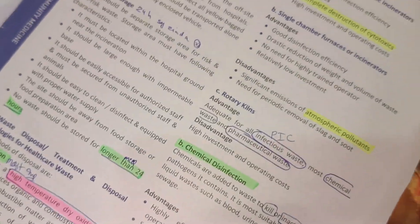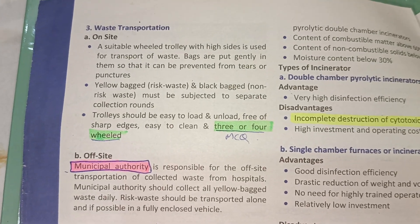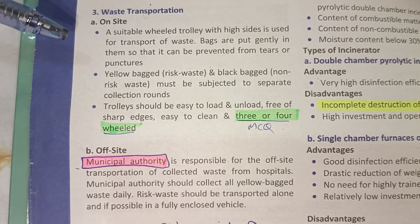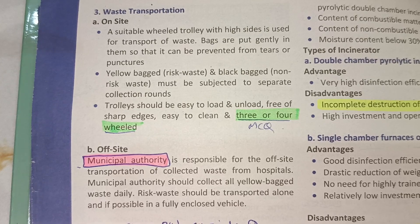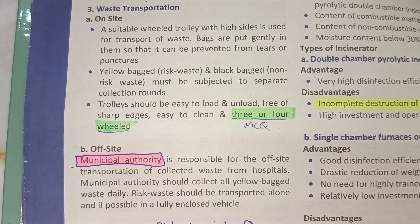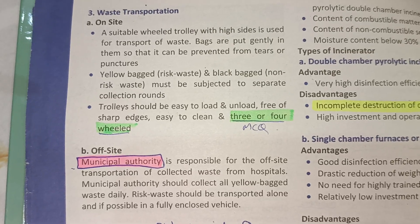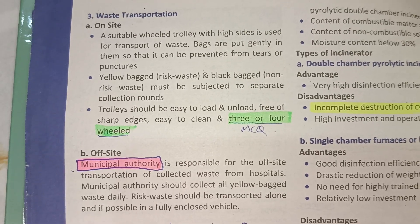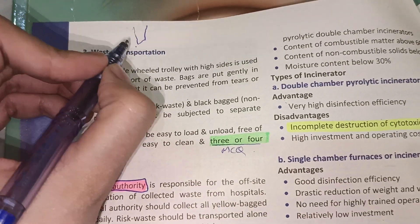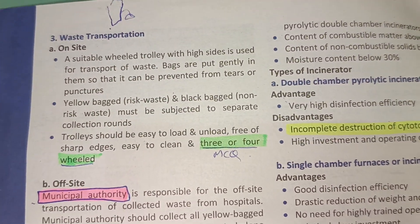Next is waste transport, which has two types: on-site and off-site transport. For on-site transport, the waste management staff uses bags — yellow bags and blue bags — as well as covered trolleys to move waste within the hospital.